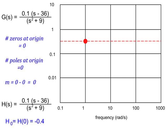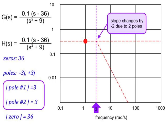Then, because the slope m is equal to 0, we draw our low frequency asymptote with a zero slope through this point. The transfer function has poles at plus and minus 3j and a zero at plus 36. For the poles at plus and minus 3j, we'll adjust the slope by minus 2 — a decrease in slope of 1 for each of the two poles. This change in slope happens at 3 radians per second, the magnitude of the frequency of the poles. As a result, the slope changes from 0 to minus 2 at 3 radians per second.